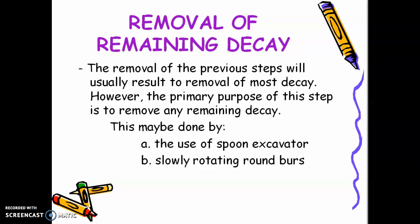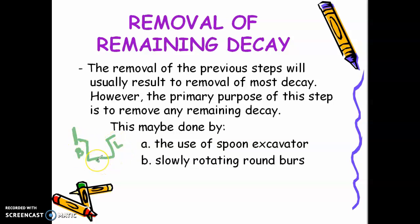With step number five — removal of remaining decay — if your preparation looks like this, with buccolingual walls inverging towards the occlusal, and there is still caries here, then you just excavate. Do not lower down the pulpal floor. You just excavate the remaining decay.